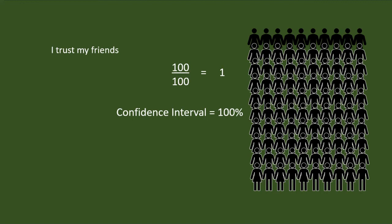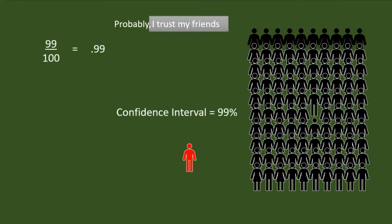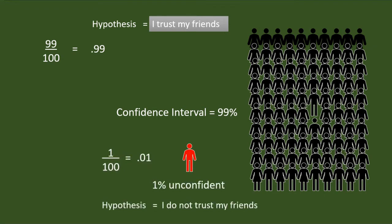But what if I started doubting the commitment of one of my friends? My confidence in saying that I trust my friends reduced. I am not sure with the statement anymore. Here emerges the concept of probability — probably, I trust my friends. My confidence interval reduced by one point; it became 99%. As I am not sure about the statement, I am stating a hypothesis: I trust my friends, because I started doubting one out of 100. In other words, I am 1% unconfident about my hypothesis.